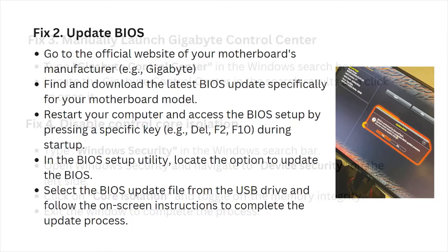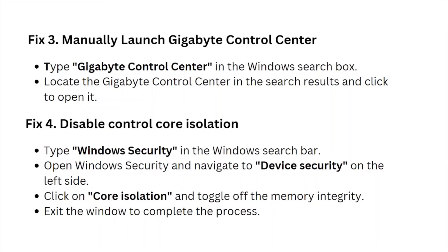Follow the on-screen instructions to complete the update process. Fix number three is to manually launch the Gigabyte Control Center. Type 'Gigabyte Control Center' in the Windows search box, locate it in the search results, and click on it to open it.